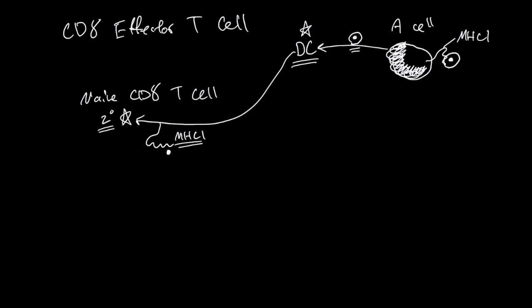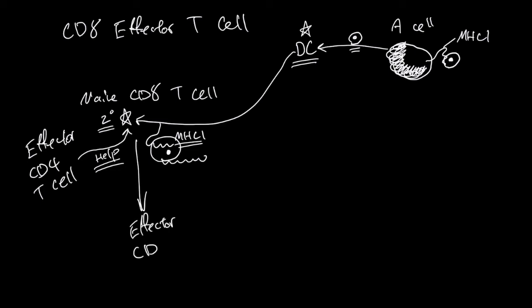activate a naive CD8 T cell, but the activation of naive CD8 T cell also needs help from effector CD4 T cell. With the T cell receptor of the naive CD8 T cell recognizing this MHC1 peptide complex and with the help from the effector CD4 T cell, the naive cell can become an effector CD8 T cell.